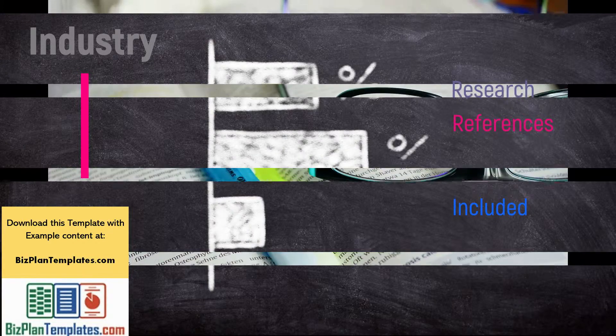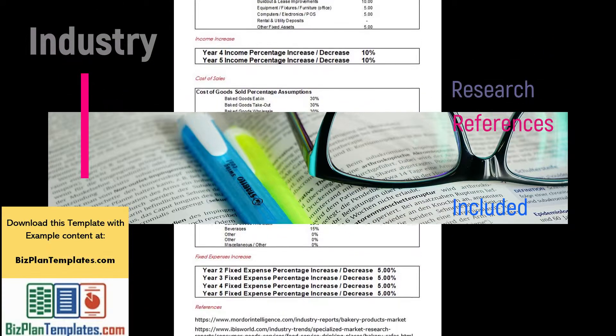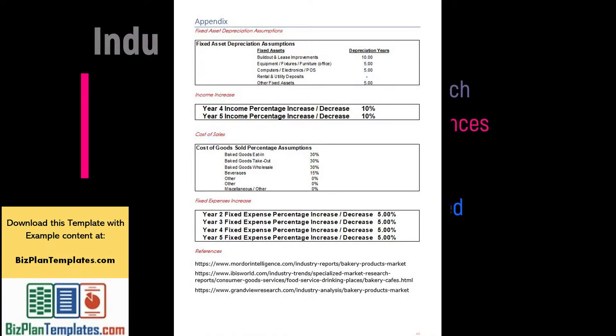An appendix in a business plan is a section at the end that provides additional information on the topics explored in the contents of the plan.